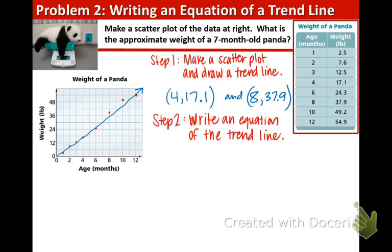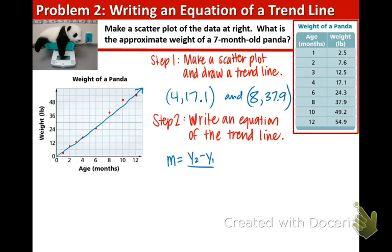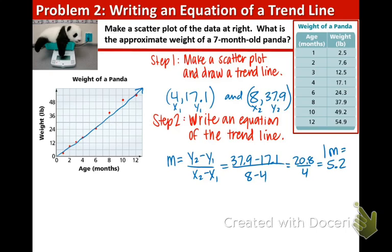First thing that we want to do is find the slope. So we're going to use m equals y2 minus y1 over x2 minus x1. Okay, we need to label our points: x1, y1, x2, y2. Now we're going to plug those in. So 37.9 minus 17.1 on top, and 8 minus 4 on bottom. And that is going to equal 20.8 over 4. That equals 5.2. So the slope of our trend line is going to be 5.2.